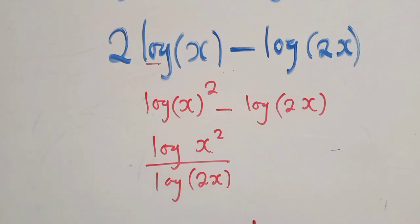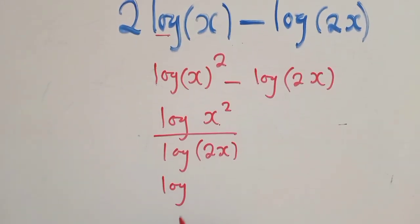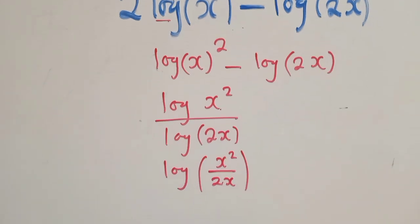Now, from here, we can say log outside, we are simplifying, open bracket, X power 2 over 2X.